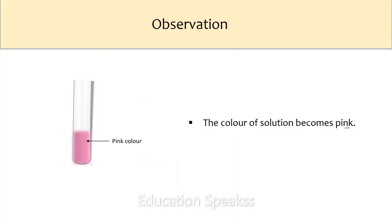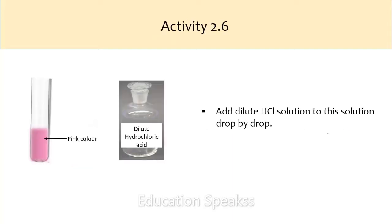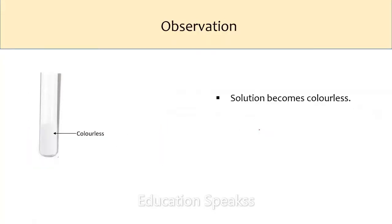The next step is to add dilute hydrochloric acid to this solution drop by drop. The color of the solution fades. If we keep on adding hydrochloric acid, the solution becomes colorless.